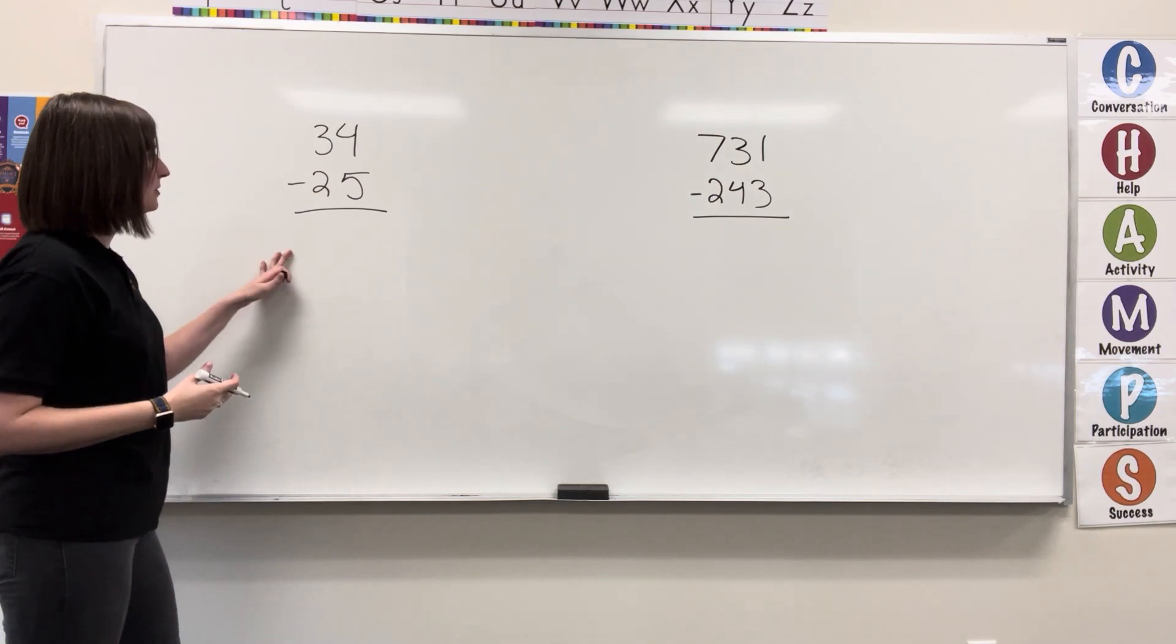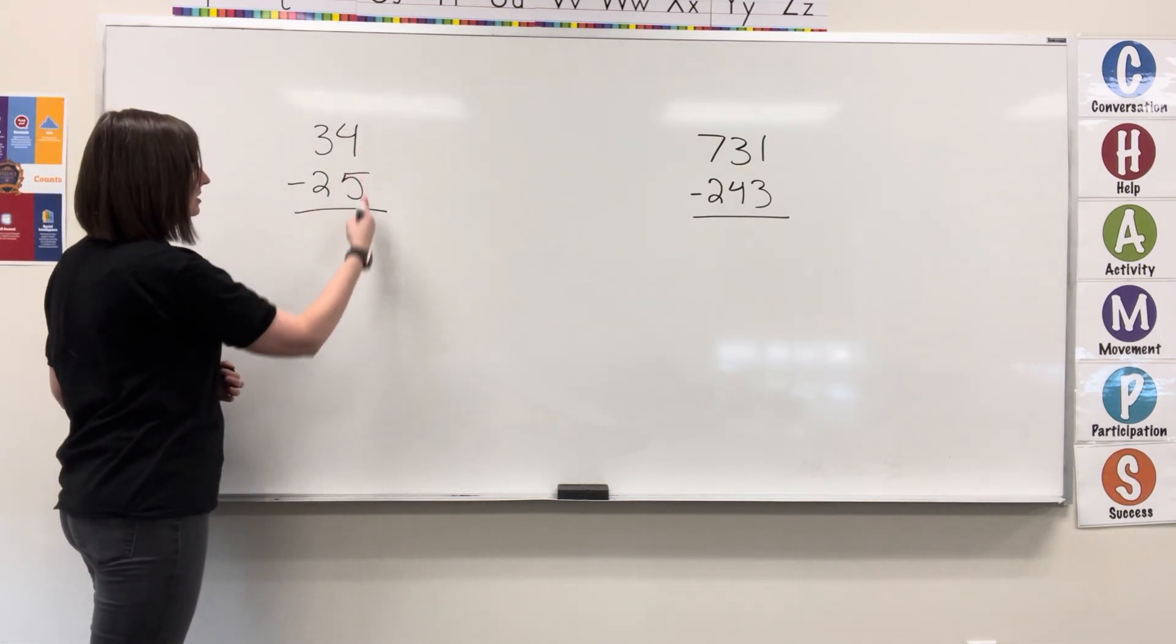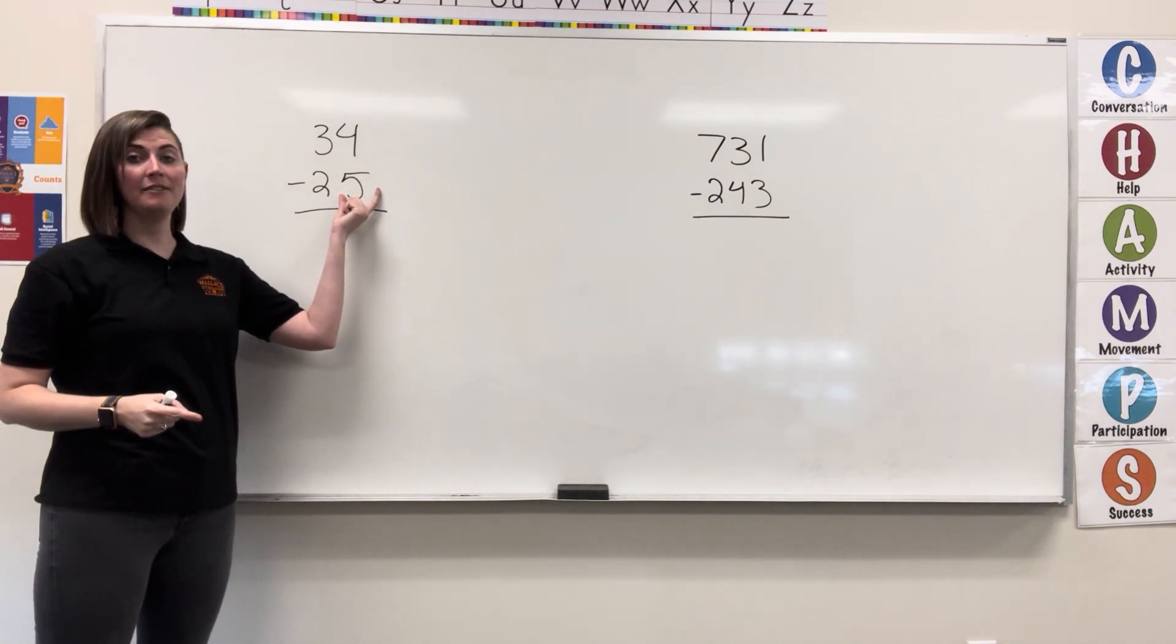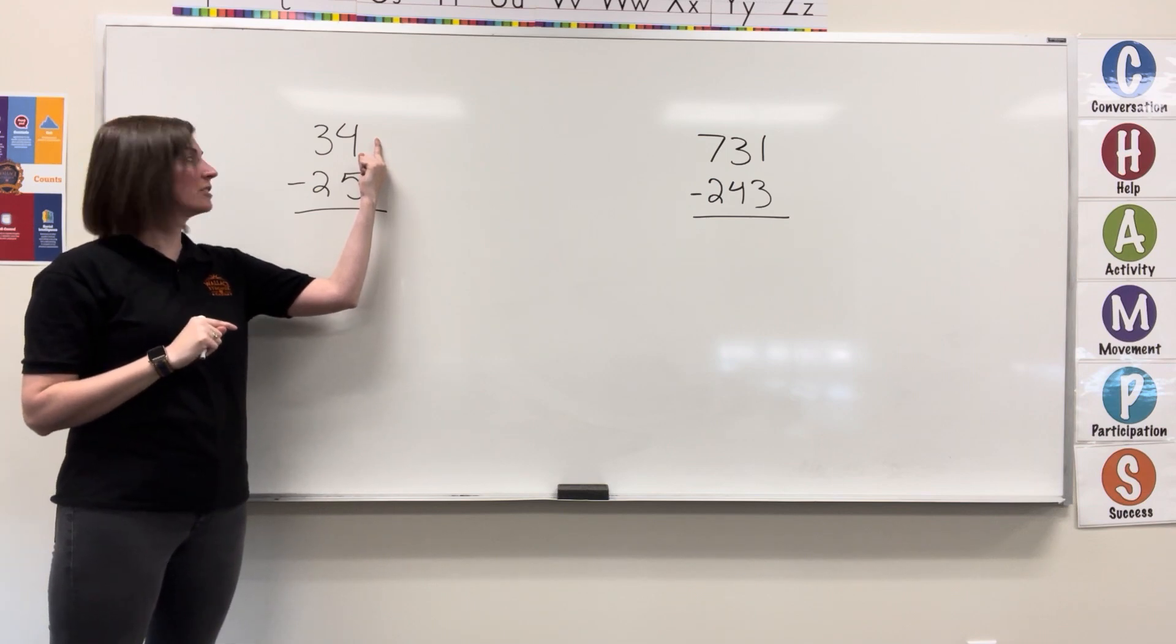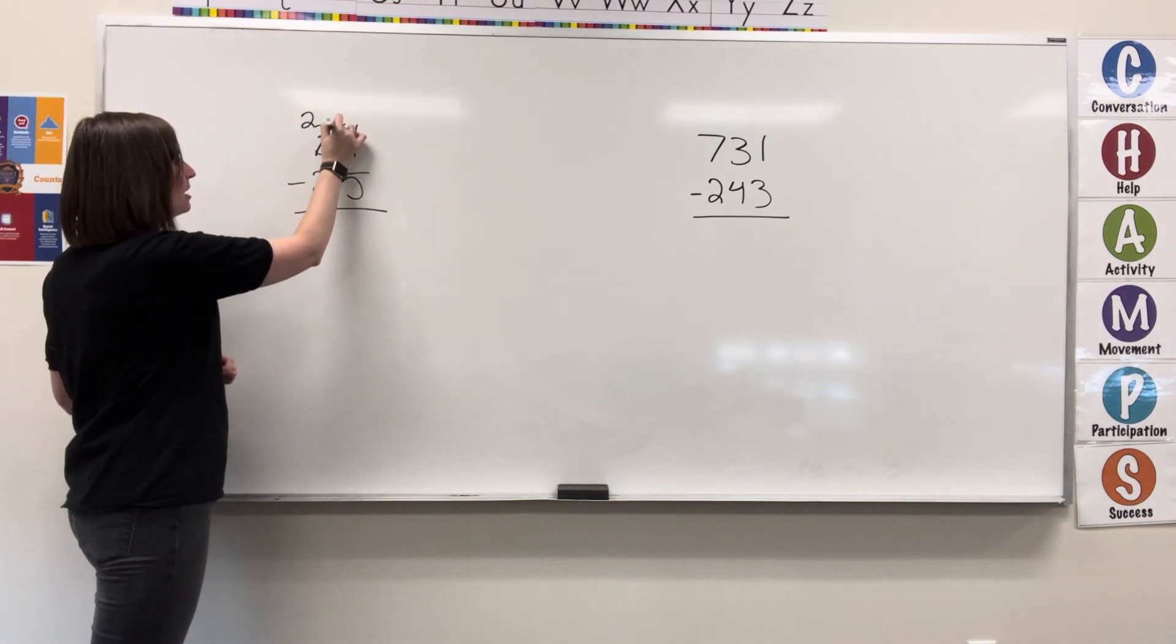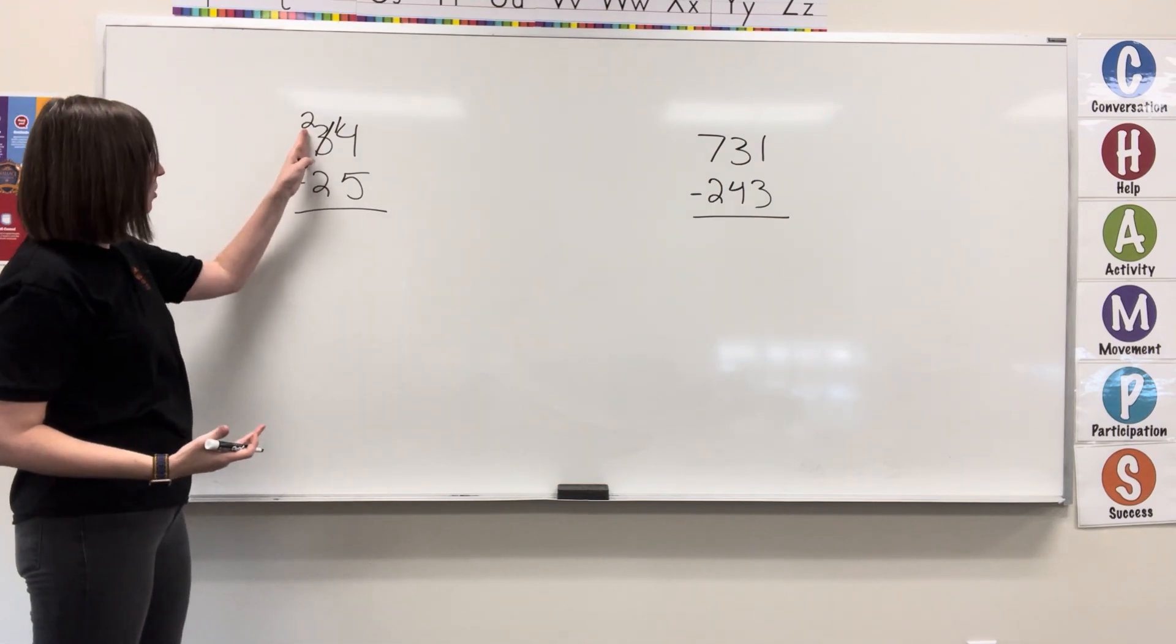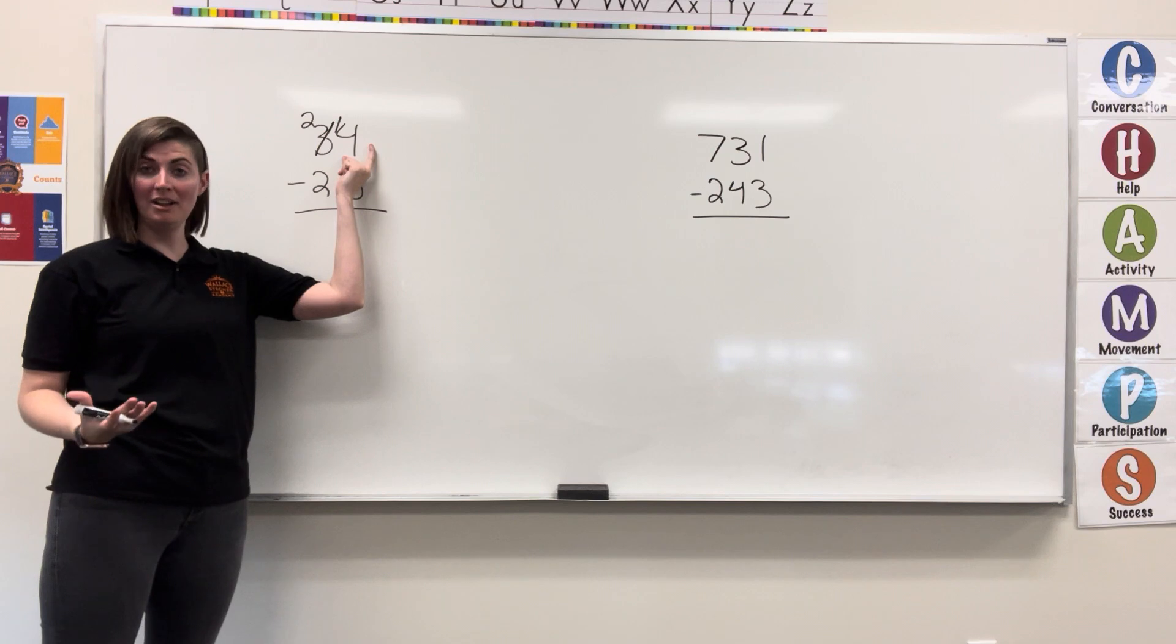In our first example, we have 34 minus 25. Starting our subtraction in the ones column, 4 minus 5. I cannot take 5 from 4, so I'm going to have to borrow some values from the 10s. I'm going to cross out my 3, write a 2, and my 4 is now 14. I've taken 1 ten and turned it into 10 ones.